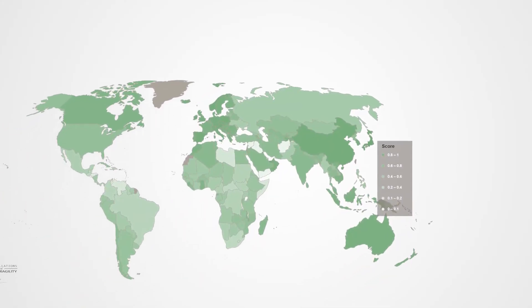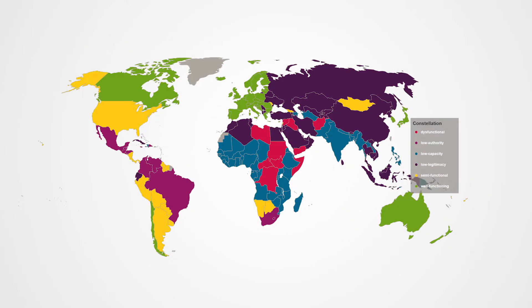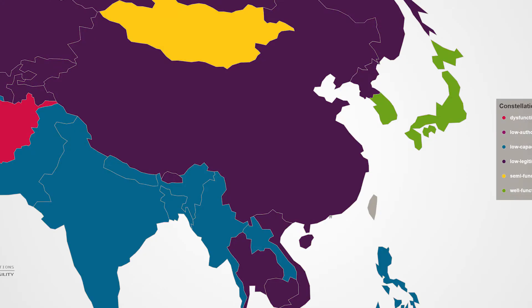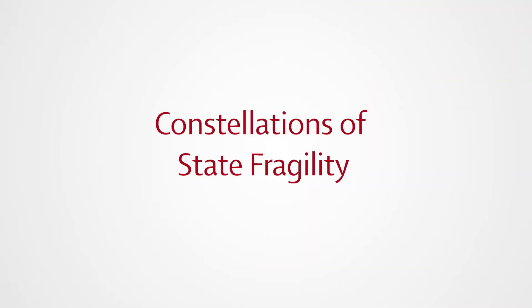This structuring of data for countries worldwide now opens up a new perspective on state fragility. We used a statistical method to actually identify patterns in this data set. Imagine swarms of mosquitoes in a room that are not evenly distributed but come in swarms — the task is to identify where these swarms are and who belongs to them. These clusters are what we call constellations of state fragility.